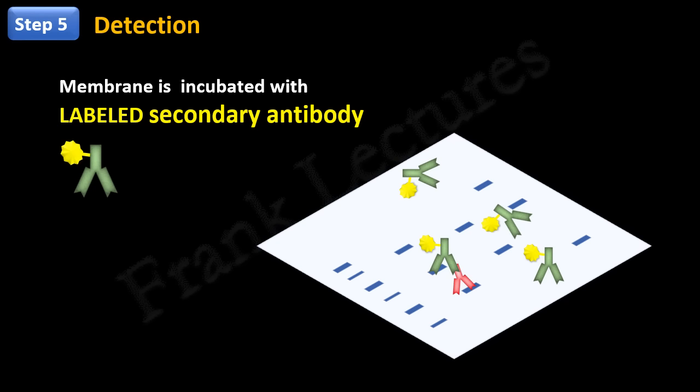So, when the membrane is incubated with labeled secondary antibody, these antibodies bind to the primary antibody that is already bound to the target protein on the membrane. Excess of secondary antibodies are also removed by washing.